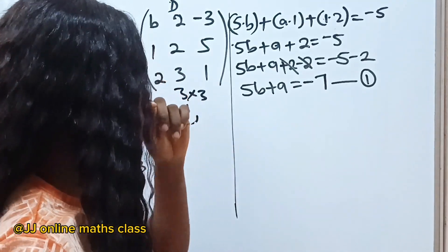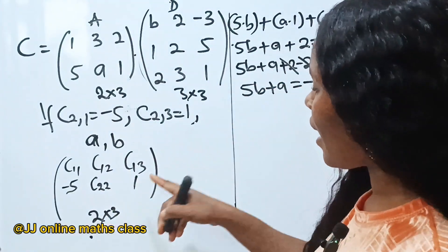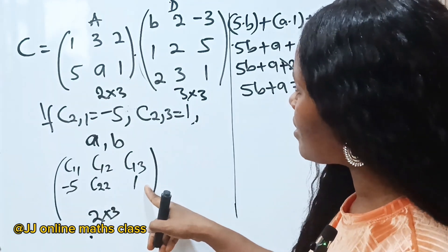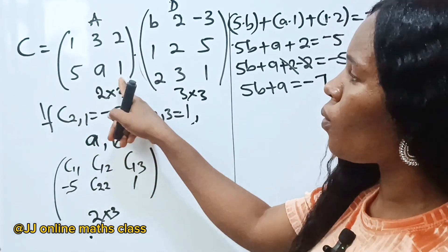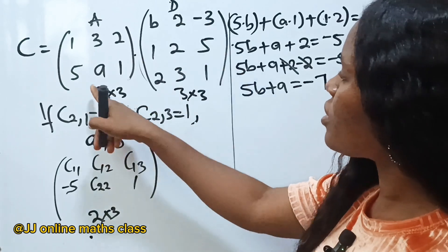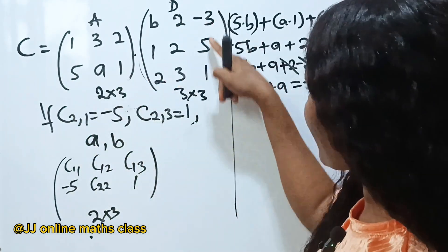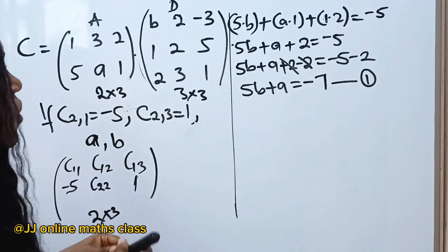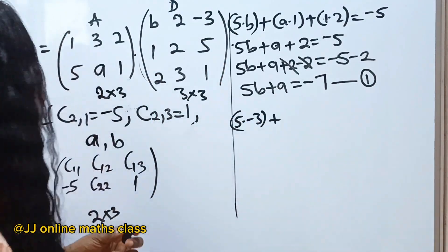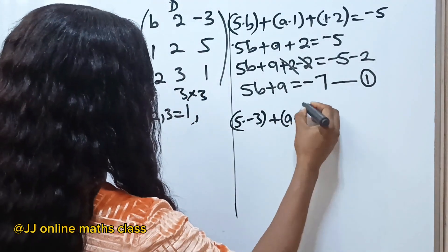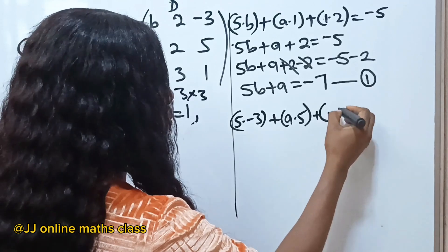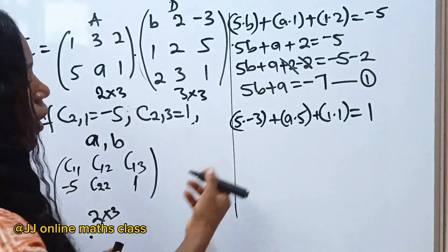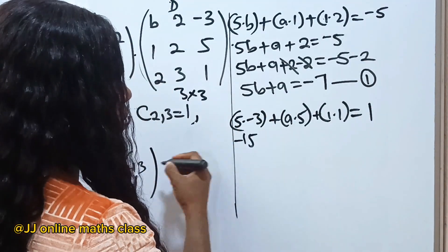Now let's form Equation 2 using c23, which equals one. c23 is found by multiplying the second row of A by the third column of B. So: five times minus three, plus a times five, plus one times one equals one. That gives us -15 + 5a + 1 = 1.